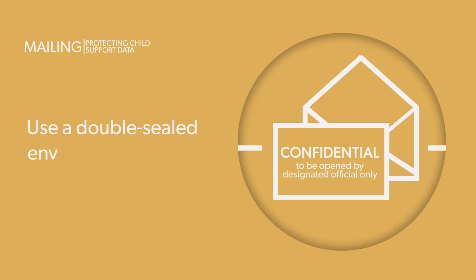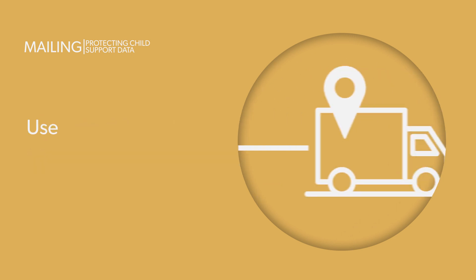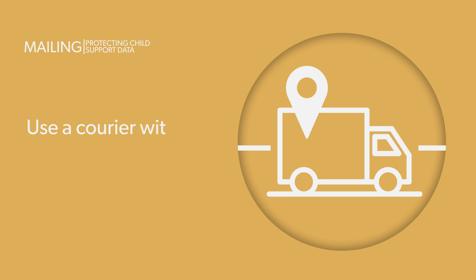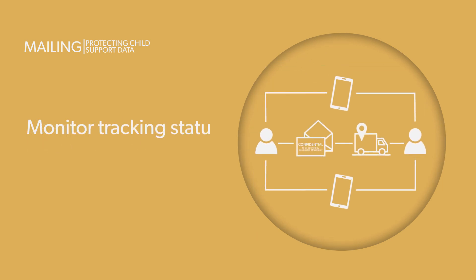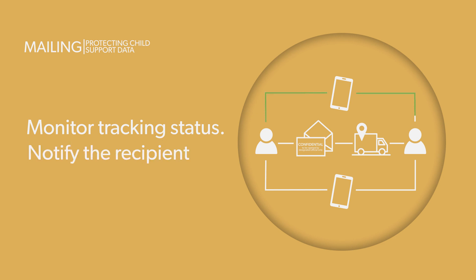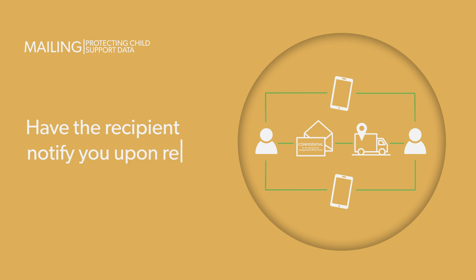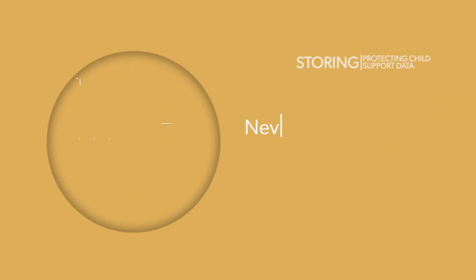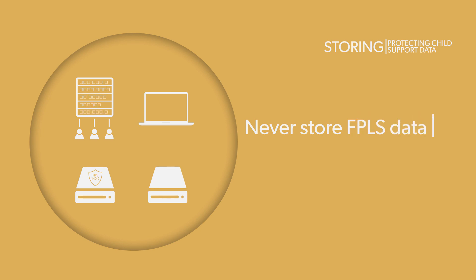Mailing: when you must send materials by mail, use a double-sealed envelope and mark the interior envelope 'Confidential — to be opened by designated official only.' If sending personally identifiable information, use UPS, FedEx, or a courier with tracking software. Monitor the tracking status, notify the recipient that the documents are coming, and have the recipient notify you upon receipt.